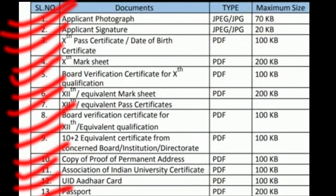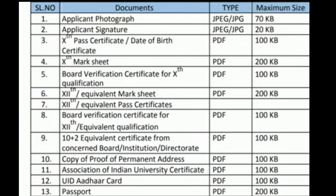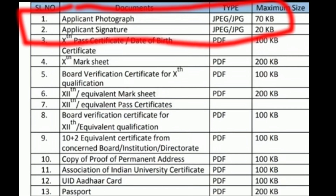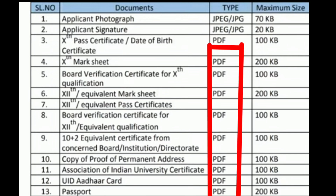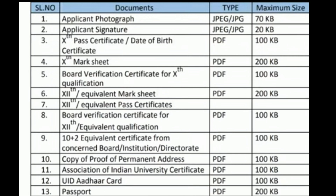We are now done with all the documents. Make a separate folder and put all scanned files of these documents there. The first two documents should be in JPEG or JPG format, and the rest of the documents should be in PDF format. Compress all these documents via any app or website. Make sure that while compressing the files, they must be easily readable, and their size should be less than the maximum size mentioned in the table.